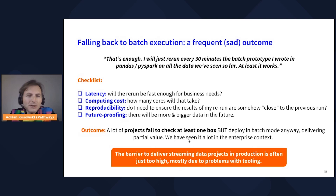The sad realization is that a lot of industrial projects we encounter on a day-to-day basis in enterprise fail to check at least one of those boxes. Nonetheless, they choose to deploy in batch mode, delivering only partial value. The barrier to deliver streaming data projects in production is just too high, and the tooling is missing. The industry opts for second best, losing out on all the value that streaming can offer.